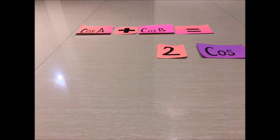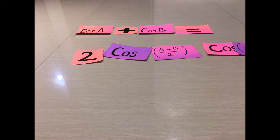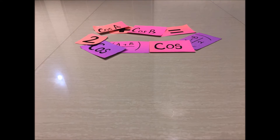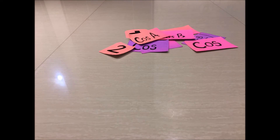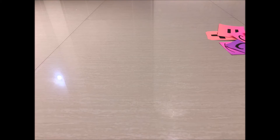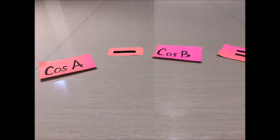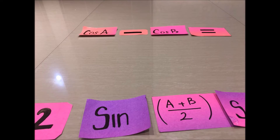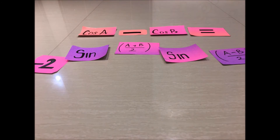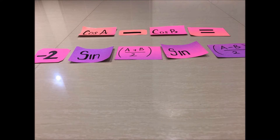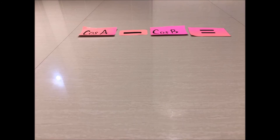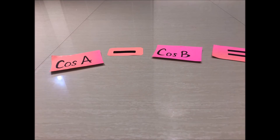cos A - cos B = -2 sin((A+B)/2) sin((A-B)/2). Jika alpha + beta = A dan alpha - beta = B.